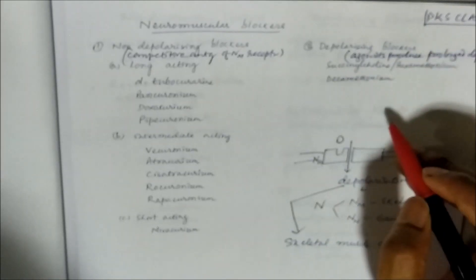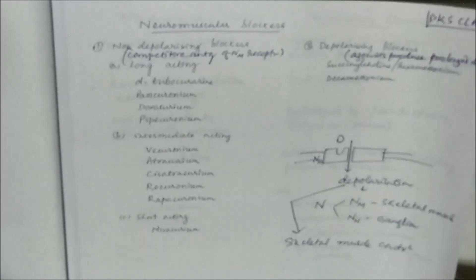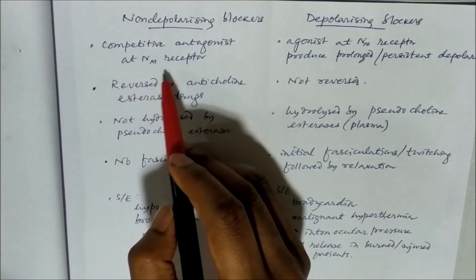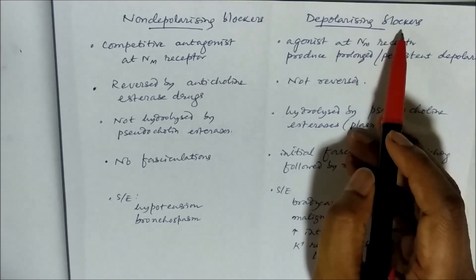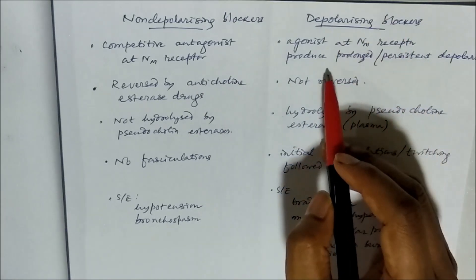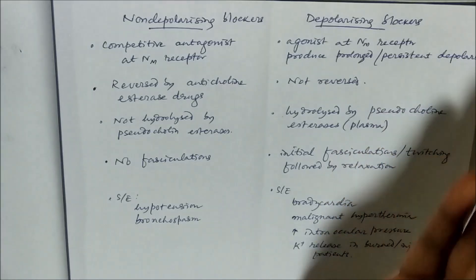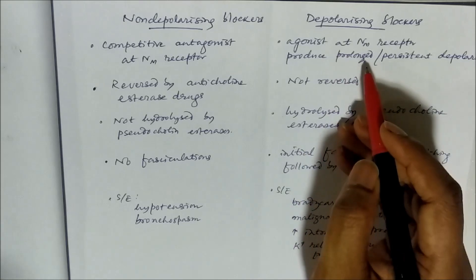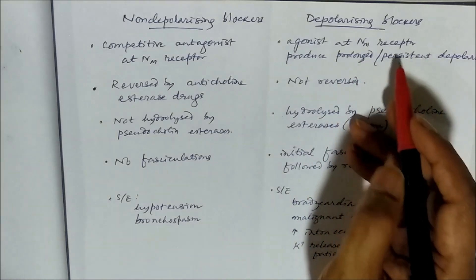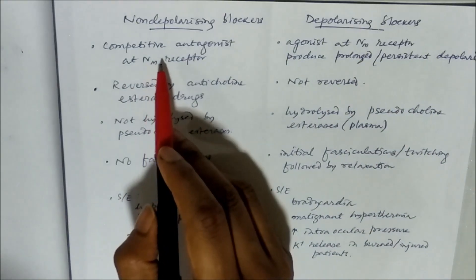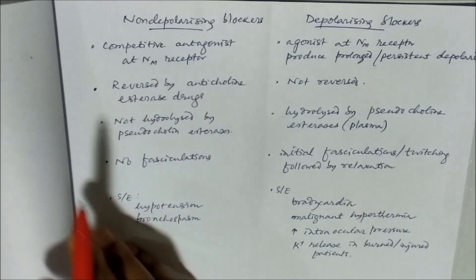Depolarizing blockers are succinylcholine (suxamethonium) and decamethonium — they produce prolonged depolarization. Non-depolarizing blockers are competitive antagonists at the nicotinic muscular receptor, whereas depolarizing blockers are agonists at the NM receptor but produce prolonged or persistent depolarization, because of which they prevent other impulses and indirectly block the receptor, producing skeletal muscle relaxation.